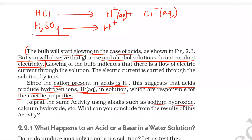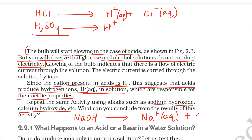One more question is given: repeat the same activity with sodium hydroxide and calcium hydroxide. What can you conclude from this? When we repeat this activity with sodium hydroxide and calcium hydroxide, they will also conduct electricity, because NaOH dissociates into Na⁺ ions and OH⁻ ions. So all substances which can dissociate — meaning divide into ions — conduct electricity, but substances which do not dissociate into ions do not conduct electricity.